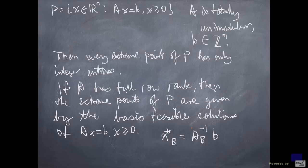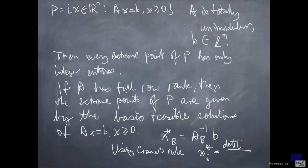But we can write this differently using Cramer's rule. Using Cramer's rule, x_i-star is given by the determinant of A sub B_i, where the matrix B_i is obtained from A sub B by replacing the column corresponding to A_i by the right-hand side b.